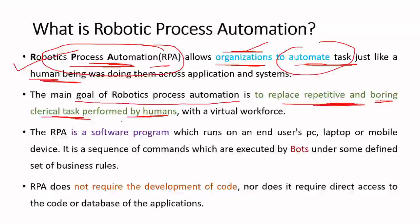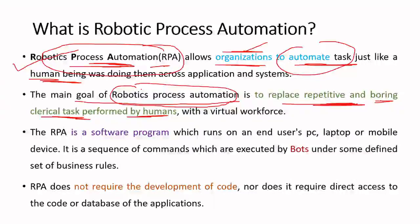This kind of repetitive and boring task or process can be replaced by software robots built using a technology called Robotic Process Automation. That is what RPA is at a high level — RPA technology helps us build software robots that can perform the repetitive and boring tasks of humans.